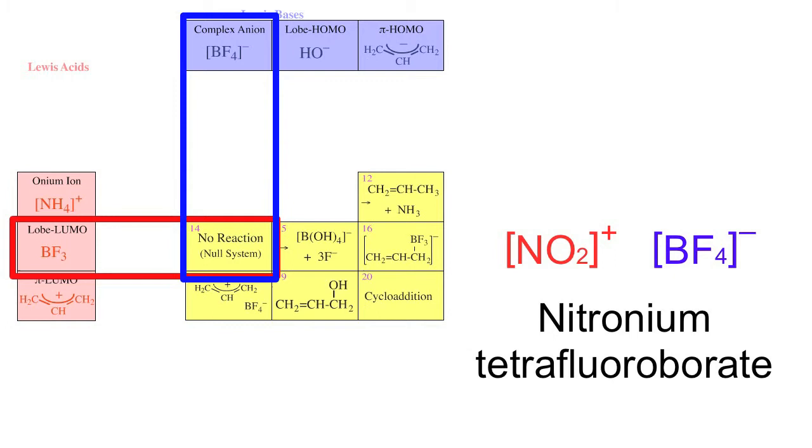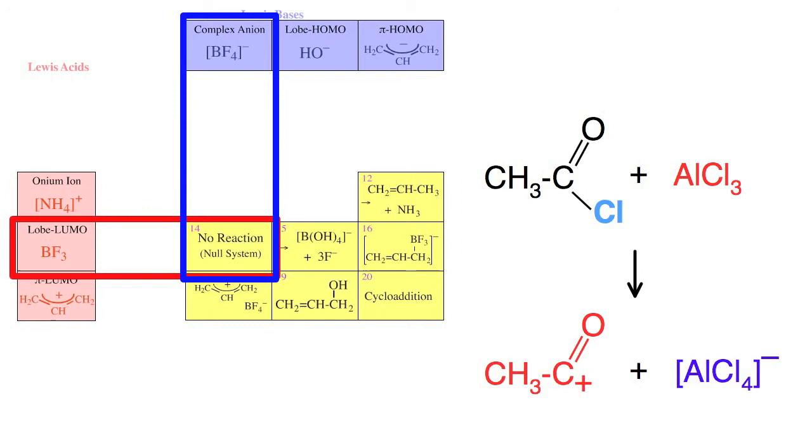Nitronium tetrafluoroborate: the nitronium NO2+ ion is a powerful electrophile and requires an inert counter ion. BF4- is an excellent counter ion. Another example would be the interaction of an acyl chloride with aluminum chloride to produce the acyl cation with the tetrachloroaluminate counter ion.